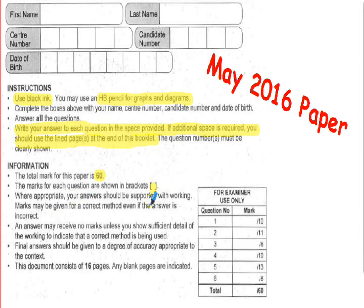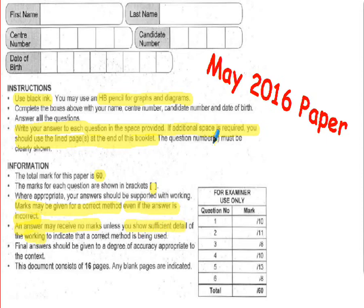Where appropriate, your answers should be supported with working — show all your working. Importantly, marks may be given for a correct method even if the answer is incorrect. In a five- or six-mark question, only one mark is really for the final correct answer; the other marks are for the method. Also, an answer may receive no marks unless you show sufficient detail of the working — you could get the correct answer but, without showing how you got it, receive absolutely no marks whatsoever.